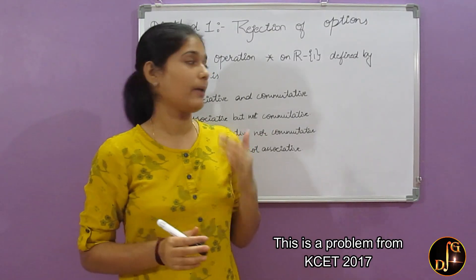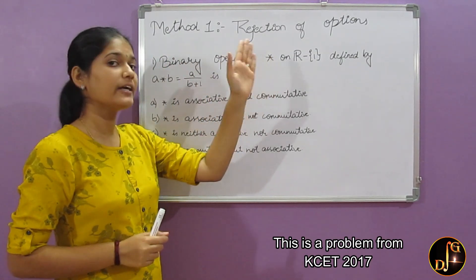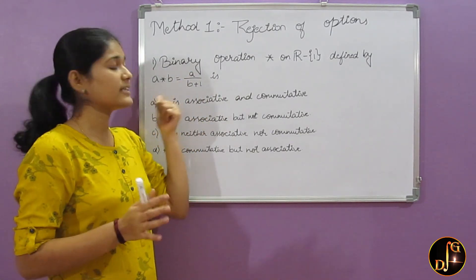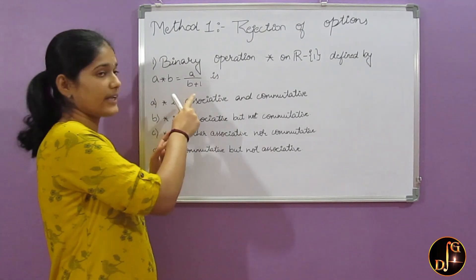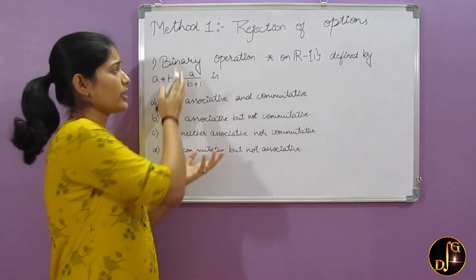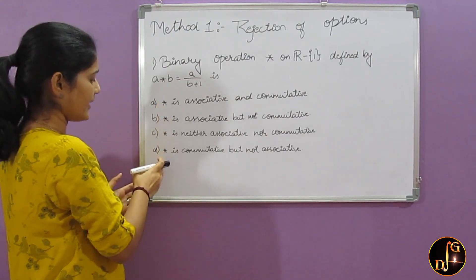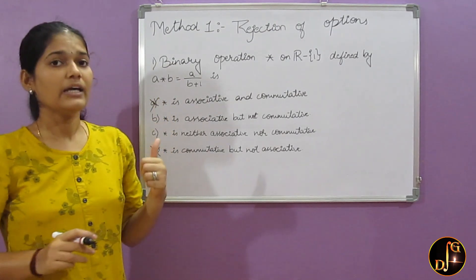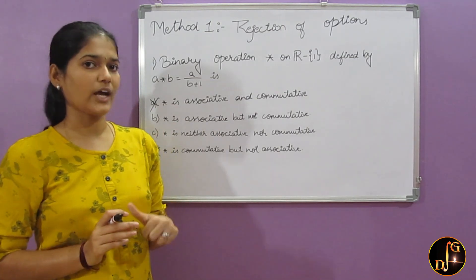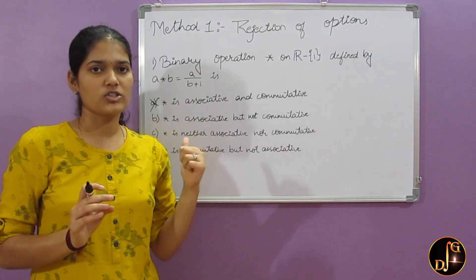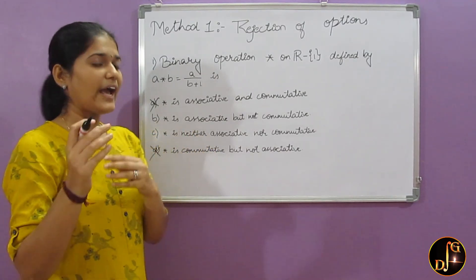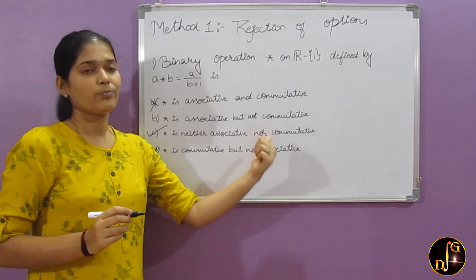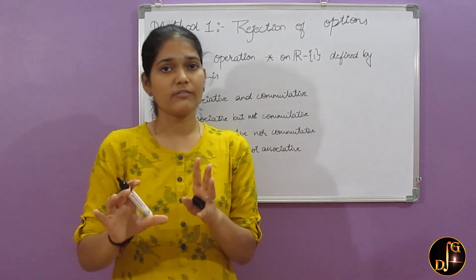Here is an example. In this problem, they have given a binary operation star defined by a star b is equal to a/b + 1. By seeing this, we can directly conclude that this is not commutative because b star a will be b/a + 1, and clearly it is not equal to a/b + 1. So in options A and B, we have star b is commutative, so we can directly remove these two options. Now to check which is the correct one, we have to check for associativity. We will get that it is not associative also, which means the correct option is: star is neither associative nor commutative.